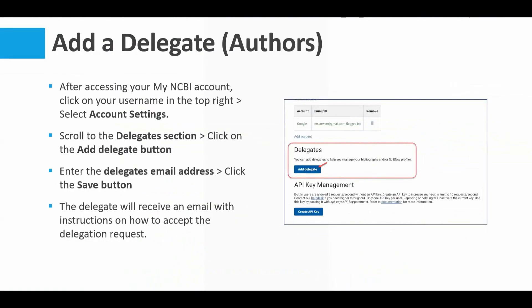Next up: adding a delegate. If you're someone who wants to be a delegate, you can take these instructions to your author. I also have an email template I'll share in the follow-up email that you can send to your faculty member to request they make you a delegate. The author goes to Account Settings once logged in, scrolls down to the Delegates section, clicks the blue 'Add Delegate' button, enters an email address, and clicks Save. The delegate will receive an email with instructions to accept the delegation request.